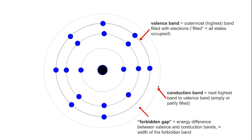According to Bohr's theories, an electron can have enough energy to be in one shell, or a higher amount of energy to be in another shell, but it cannot exist in between. So in order to get from one shell to the next, it needs a very specific amount of energy. In terms of insulators, this is actually quite a large gap to overcome.